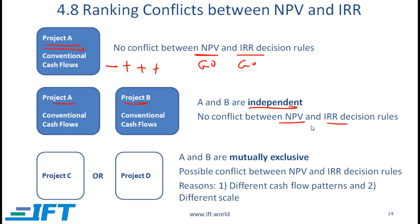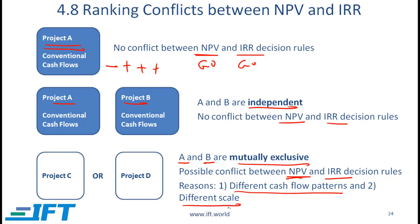We have a possible issue if we have two projects which are mutually exclusive, and this can happen even with conventional cash flows. It is possible that we can have a conflict between the NPV and IRR rules, and the conflicts can arise because of two possible reasons: one, there is a difference between the cash flow patterns, and two, there is a difference in the scale.